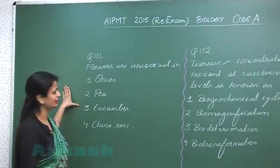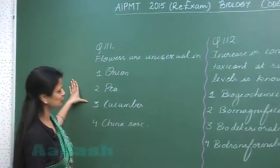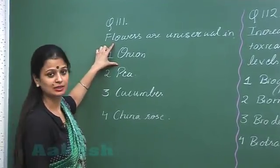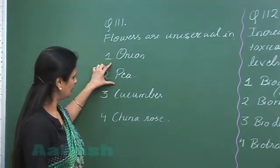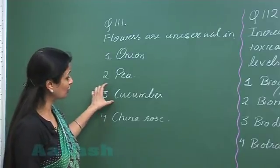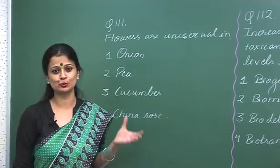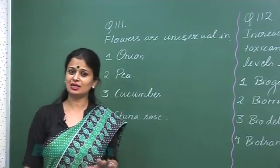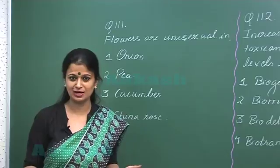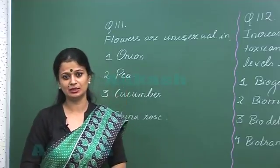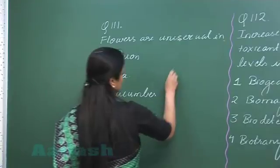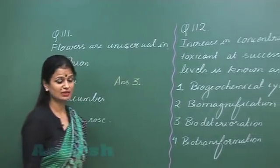Looking at question number 111: flowers are unisexual in which plant? Onion has bisexual flowers, lily (Liliaceae family) has bisexual flowers, China rose (Malvaceae family) has bisexual flowers. Cucumber, which belongs to the Cucurbitaceae family, has unisexual flowers — male and female flowers present on the same plant body, representing the monoecious condition. So the right answer is option number three.